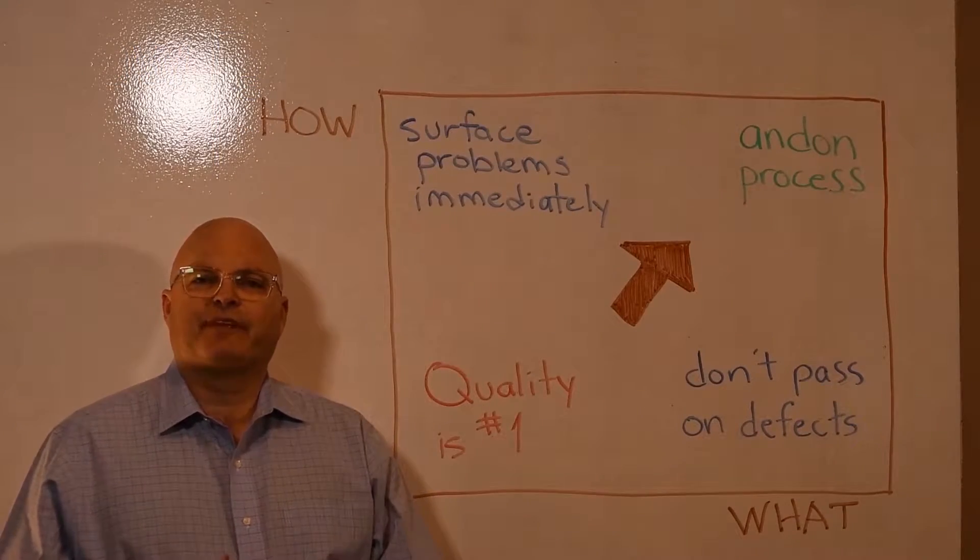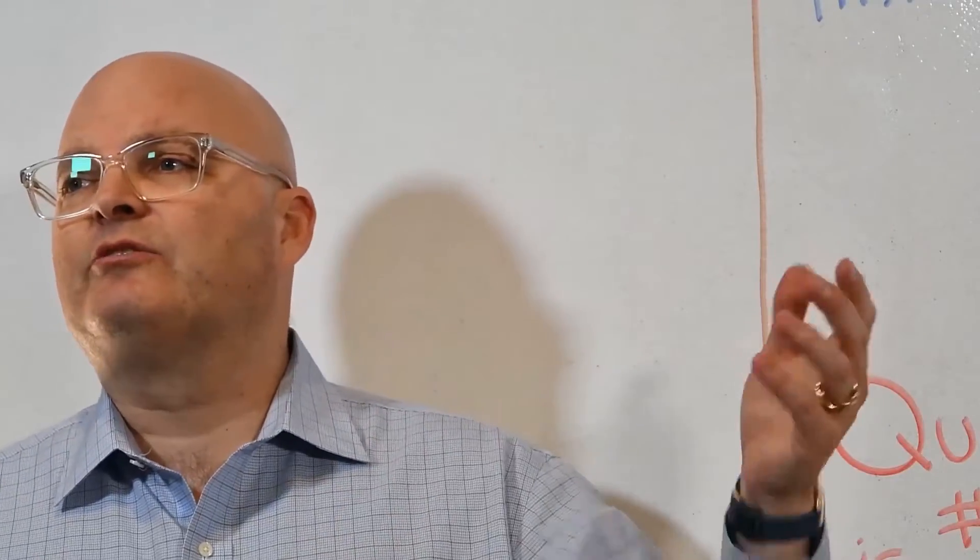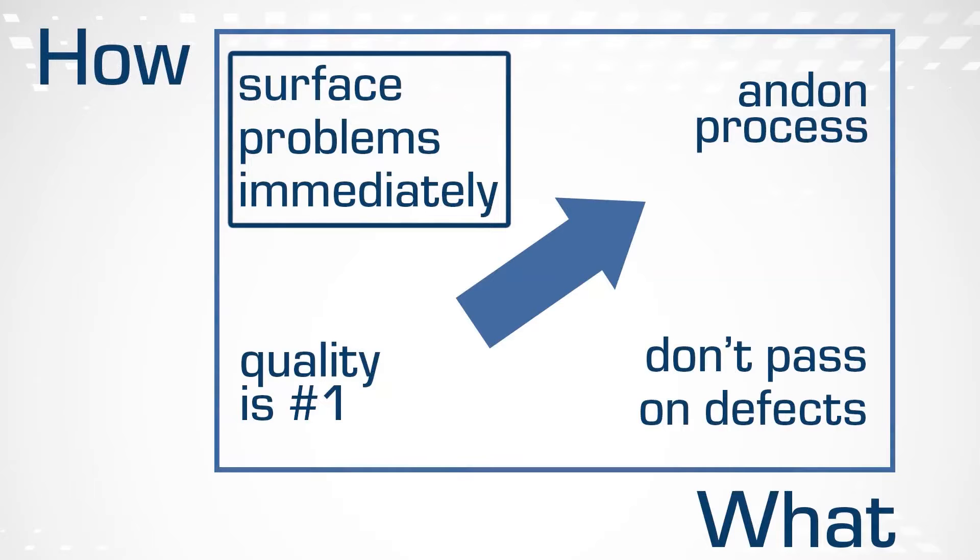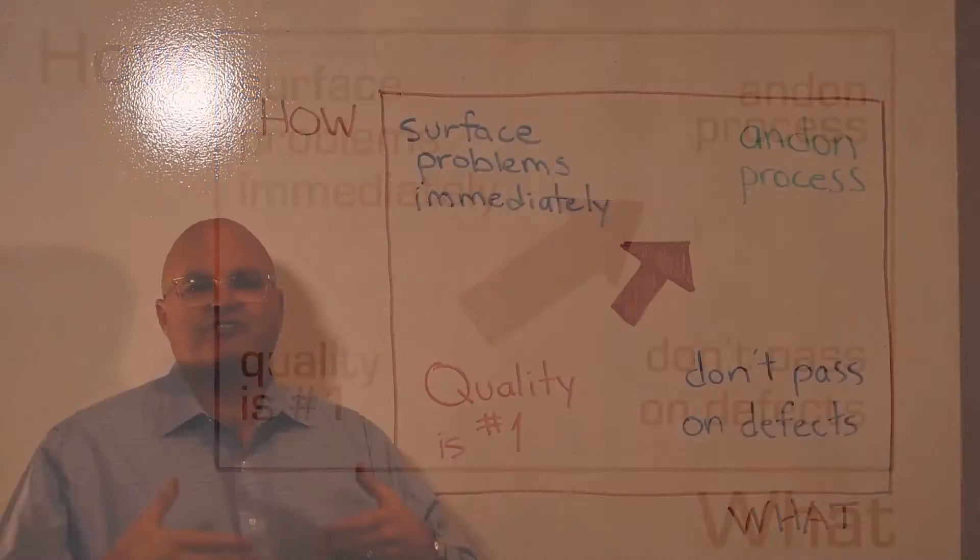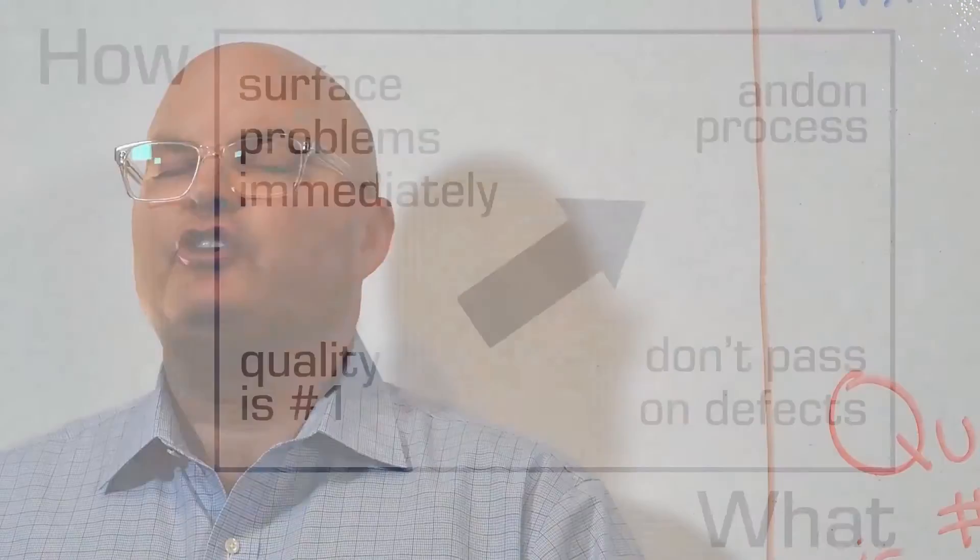But then we have to add the high agreement of the how. So the how could be surface problems immediately. When you see a problem, you immediately surface it, bring it to light so it can be addressed immediately. Now when you put all that together, when you get high agreement of both what and how.